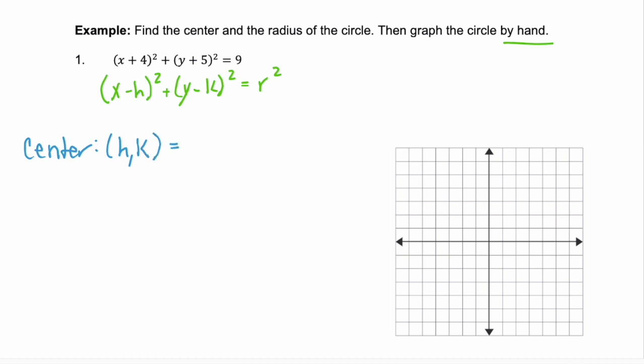The center is the point h,k. And here, our h is being subtracted from x. What number has to be subtracted from x in our given equation? Negative 4. And our k is the value subtracted from y. And for our given equation, that's negative 5.